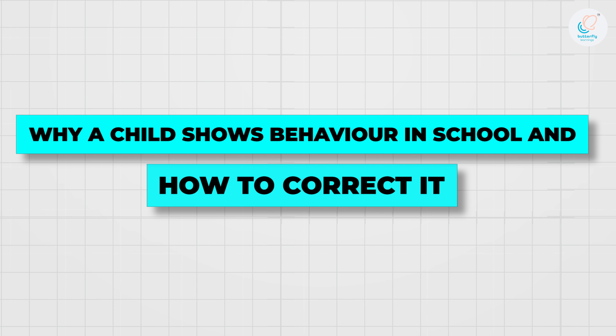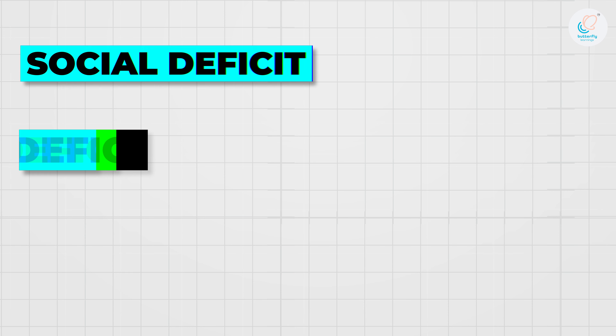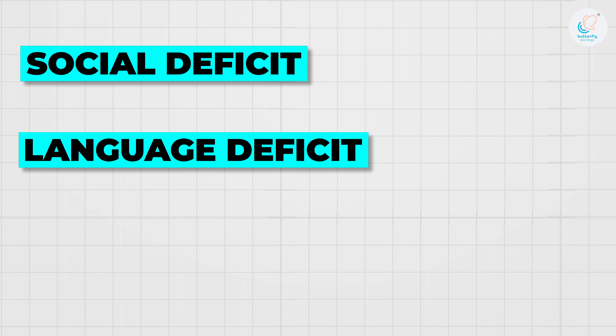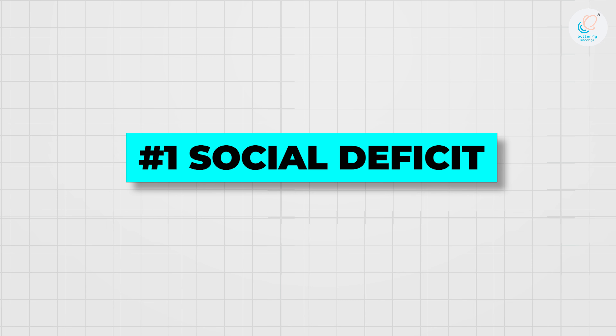Once you get to know why the child is showing the behavior, you need to intervene accordingly. Suppose the child shows a behavior in school. Usually, what are the reasons? First is social deficit, second is language deficit, and third is some deficit in life skills or academics. Now, suppose I don't like being with people, I don't like being around children, I am uncomfortable. To get out of that situation, I show a behavior. Usually a child on the spectrum will show behavior because of this reason.